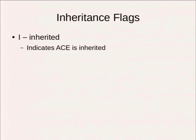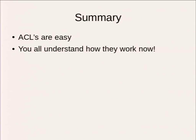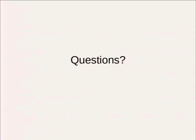Capital 'I' just indicates that the entry has been inherited. There are actually four types but FreeBSD only uses two: allow and deny. Allow means these access permissions and inheritance flags are allowed; deny means they're denied. ACLs are easy — you guys know how they work now. Are there any more questions?